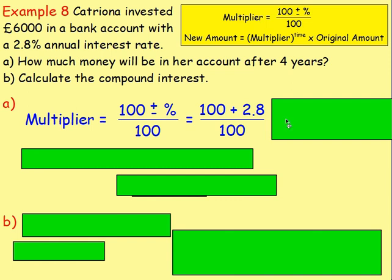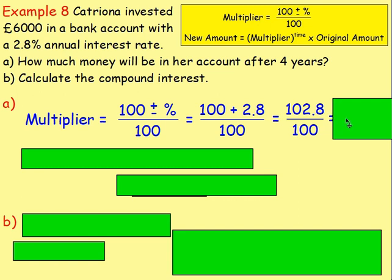100 add 2.8 is 102.8, and then you divide by 100, which gives you 1.028.